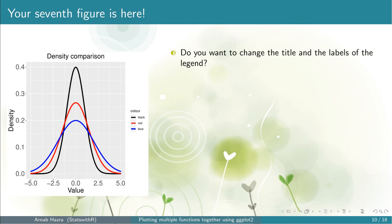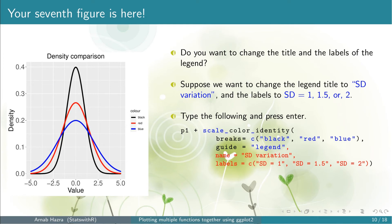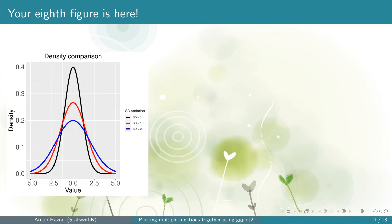You can see that the legend is back now. Note that the title and labels of the legend are not very informative. Suppose we want to change the legend title to 'SD Variation' and the labels to 'SD = 1', 'SD = 1.5', and 'SD = 2'. To do that, within scale_color_identity add name = 'SD Variation' to set the legend title, and labels = c('SD = 1', 'SD = 1.5', 'SD = 2') to set the labels.